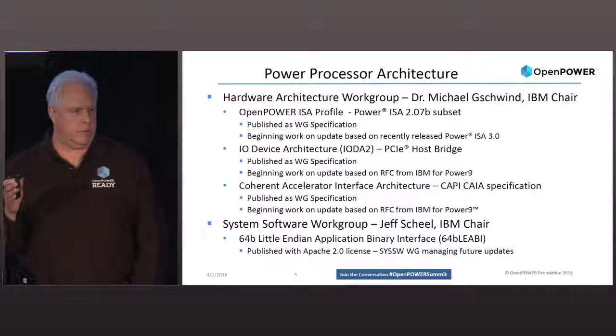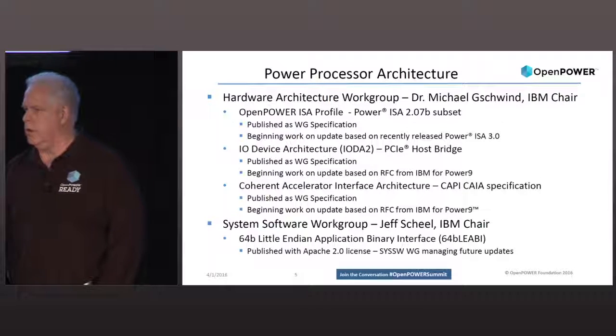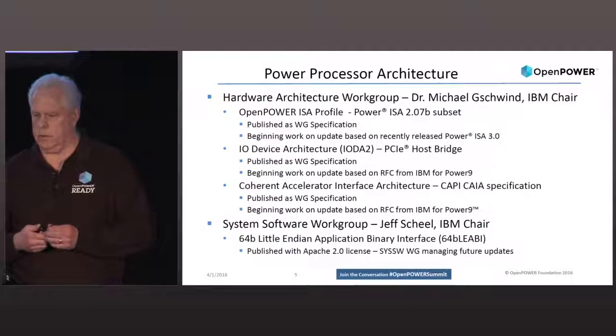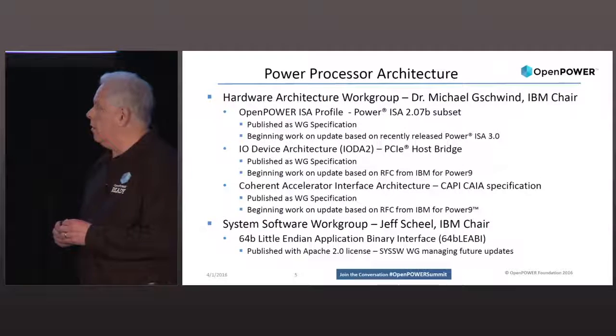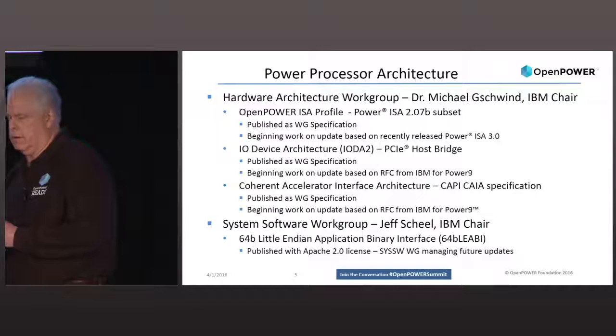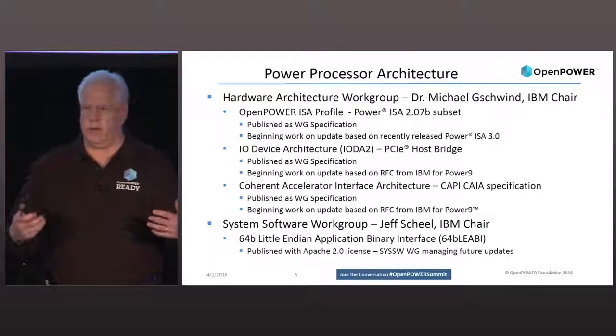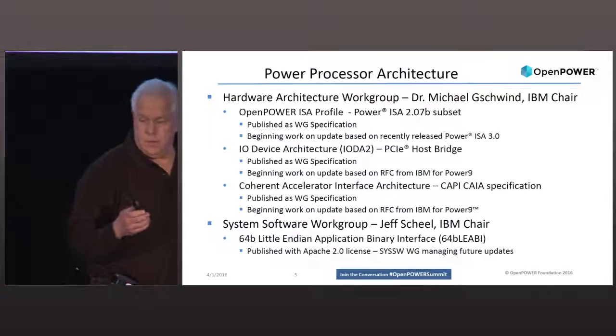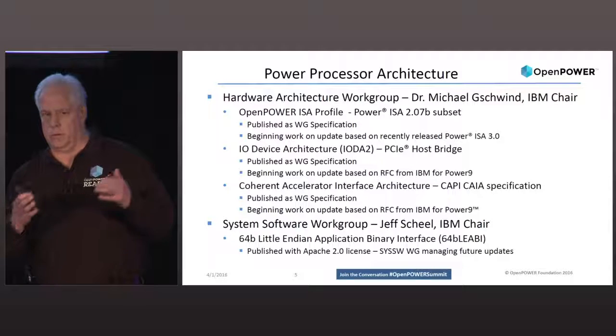All three of those specifications were delivered as work group specifications this year, and the work group is starting activity on follow-ons related to upcoming Power9 technology. We also have a system software work group chaired by Jeff Scheele. That work group delivered a specification called the 64-bit Little Endian Architecture Binary Interface — it really rolls off the tongue — which defines the way the tool flow takes advantage of the power architecture to make applications perform well and interact cleanly with each other.